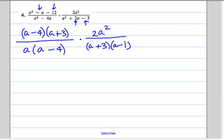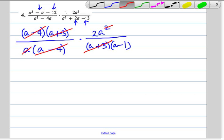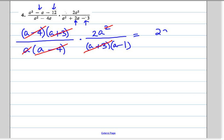Now we can reduce, so here's an A minus 4 on the top and bottom, there's an A plus 3. There's an A up here that we can reduce with the A down here, so we're left with 2A on the numerator over A minus 1.